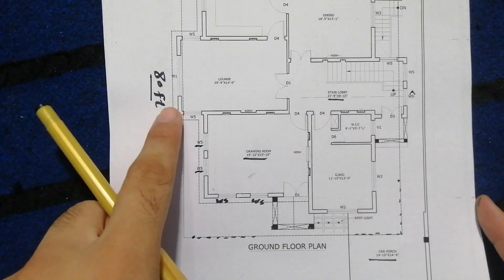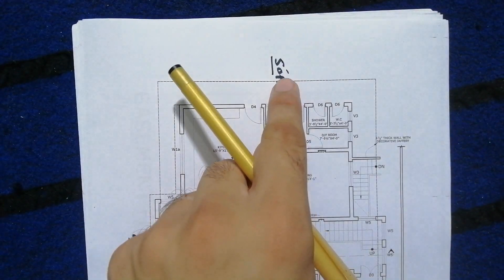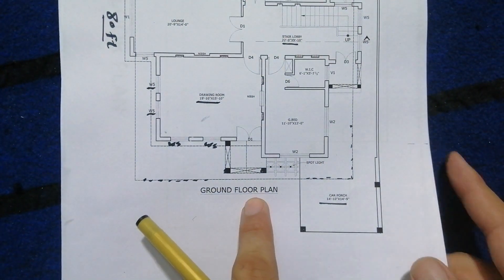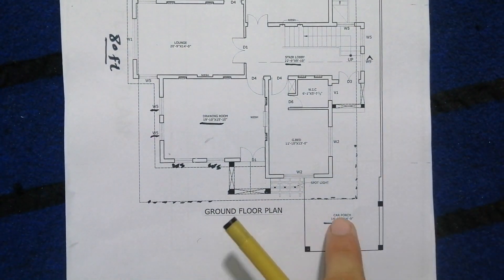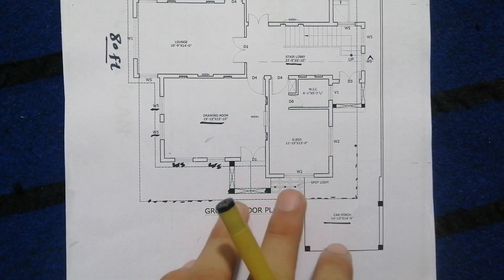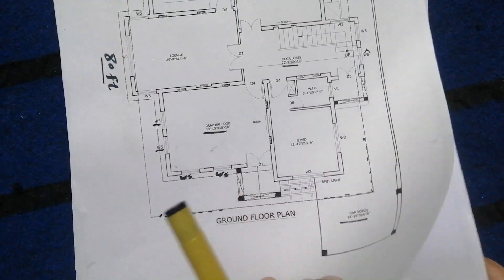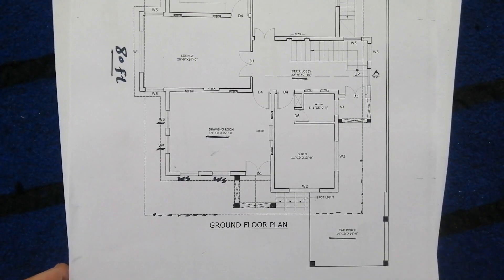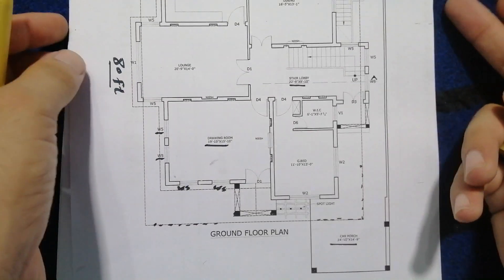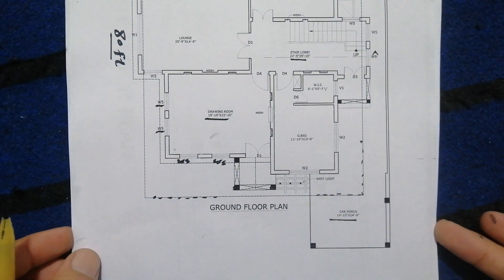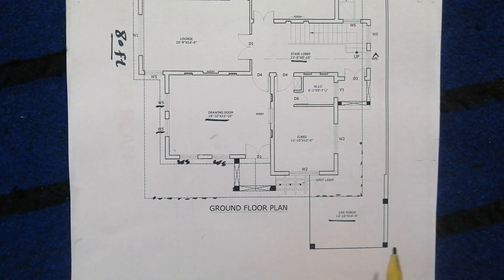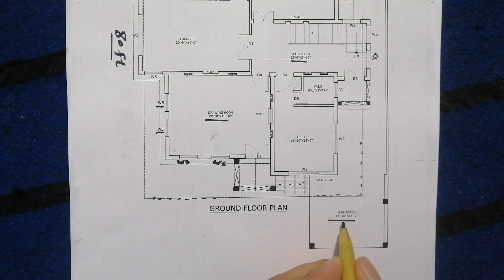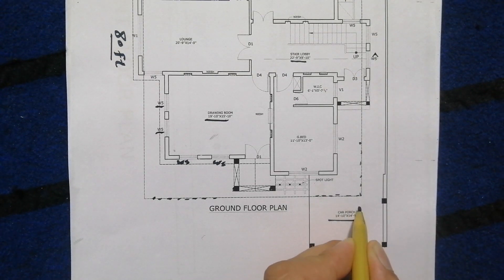The length of this house plan is 80 feet and the width is 50 feet. This is the back side and this is the front. The first element is the car porch — this is the ground floor plan and we also have a basement. There are three columns for this car porch and the size of the car porch is 14 feet 10 inches by 14 feet 9 inches.